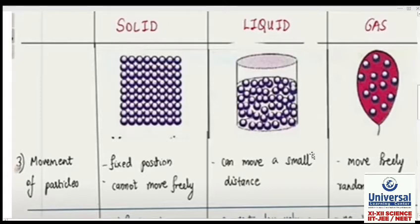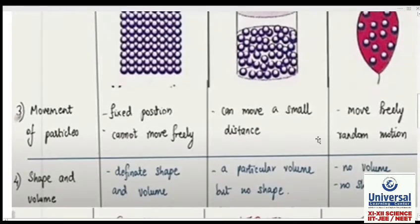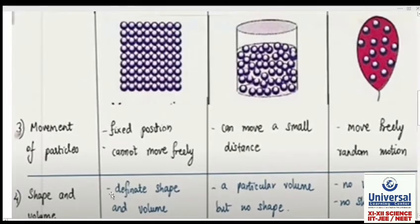Point number three we discussed. Point number four we will quickly discuss is shape and volume. If I talk about solids, then solids have a definite shape. For example, I have a mobile - it has a shape.